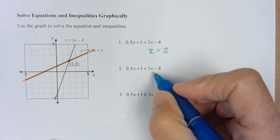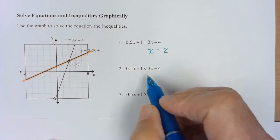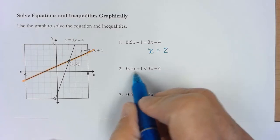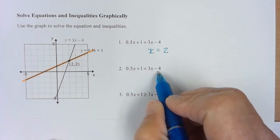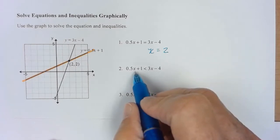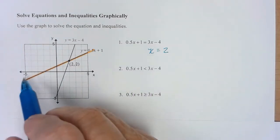Now in this one, I want to know when is my orange line below my other line. And I'm having to look at the y values for this. Now on this side...